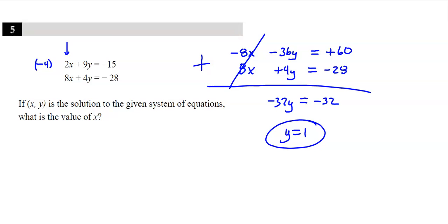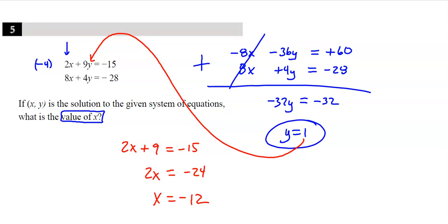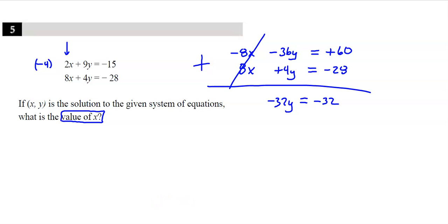But they don't want Y. They want the value of X. So I need to now take this 1, plug it in. Maybe this one. It doesn't matter. 2X plus 9 times 1 equals negative 15. Minus 9, minus 9. It's negative 24. X equals negative 12. I think I did something wrong here. Crap, I did do something wrong. Check that. Everything was really good until I got to this point. Positive 60 plus a negative 28 is a positive 32. So that's going to make Y equal to negative 1.